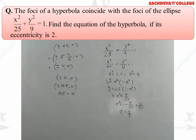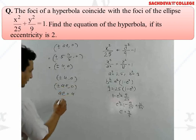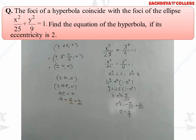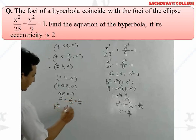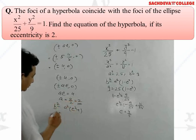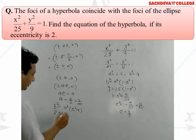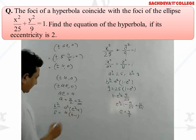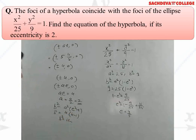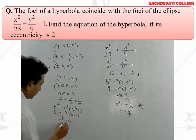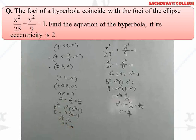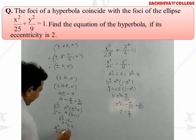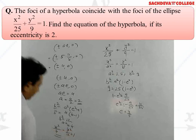Given that the eccentricity of the hyperbola is 2, putting this value in ae = 4, we get a = 4/2 = 2. Now we find b using b² = a²(e² - 1): b² = 4 × (4 - 1) = 4 × 3 = 12. So a² = 4 and b² = 12, giving the equation of the hyperbola as x²/4 - y²/12 = 1. This is the required equation of the hyperbola.